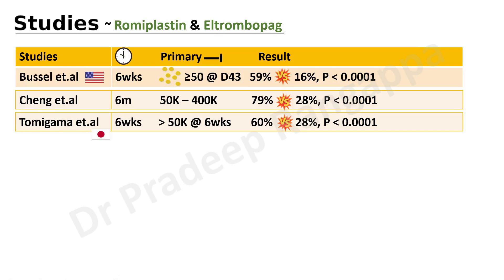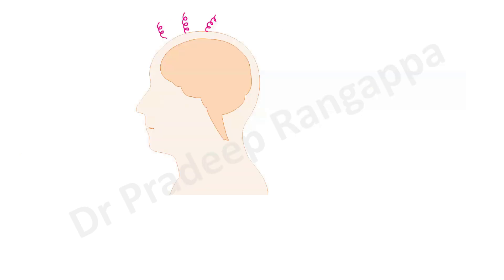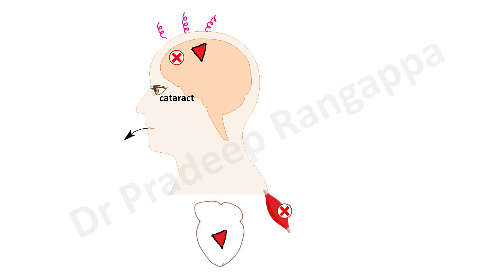Regarding adverse events: both eltrombopag and romiplostim act as chelating agents, removing polyvalent cations including iron, calcium, aluminium, magnesium, and selenium from food — which is why the drug must be taken two to three hours after food. Mild side effects include dizziness, headache, nausea, vomiting, muscle aches, and cataract. More serious effects include vascular events such as stroke, MI, or ischemic heart disease due to significant platelet elevation.